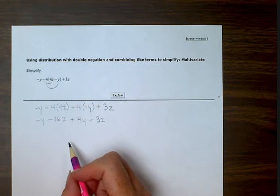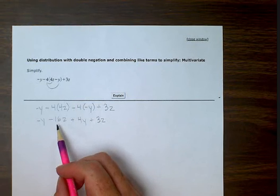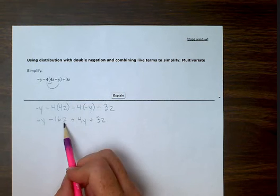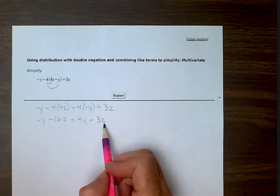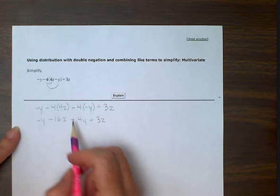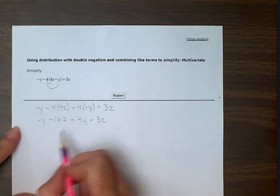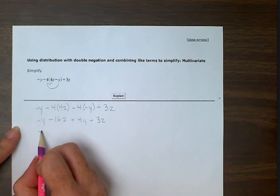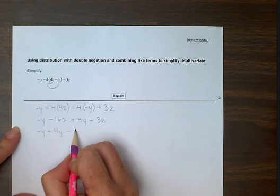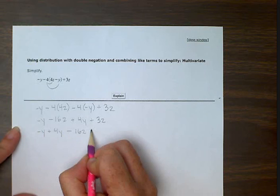So then I'm going to look for combining like terms. So I have a y over here and a y over here, a z here and a z here. So I'm going to switch around these two middle numbers so that the y's are together and the z's are together. So I have minus y plus 4y minus 16z plus 3z.